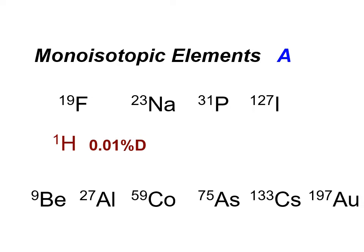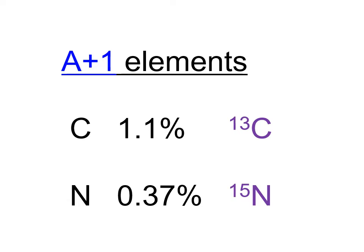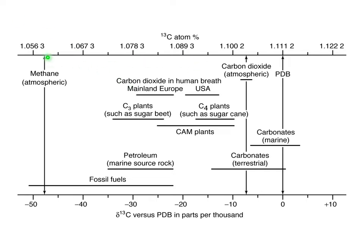Several elements have an isotope with mass number higher by one. The most important of them are carbon and nitrogen. Carbon has 1.1 percent of carbon-13, and nitrogen-14 has 0.37 percent of nitrogen-15. These numbers are approximate — for example, carbon from different sources has different isotopic composition.